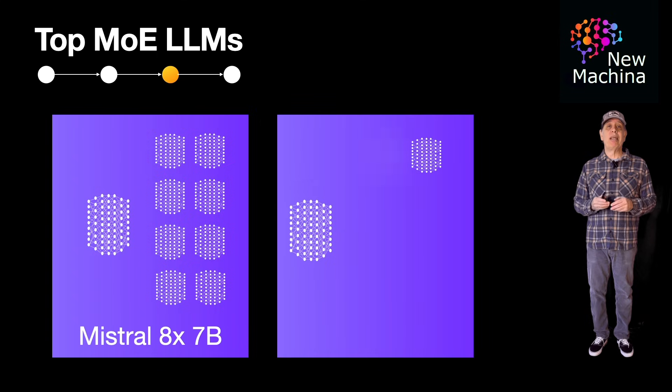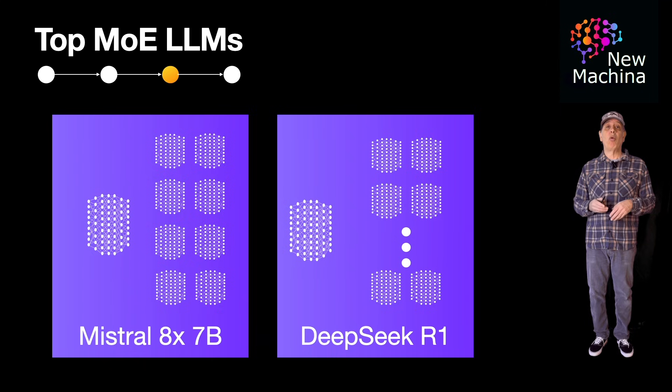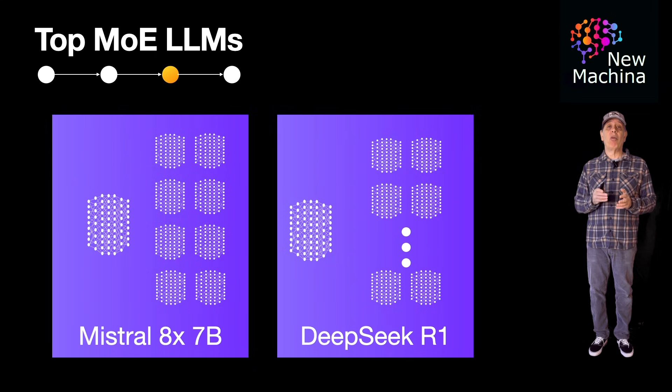Another MoE model is a Chinese model DeepSeek R1. DeepSeek R1 was launched in January 2025. This open-source MoE model comprises 671 billion parameters with only 37 billion parameters activated during inference.